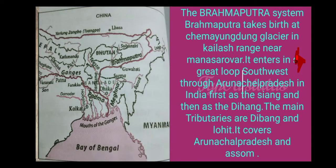The Brahmaputra System: the Brahmaputra takes birth at Chema-Yung-Dung Glacier in the Kailasa Range near Manasarovar. It enters India in a great loop, flowing southwest through Arunachal Pradesh, first as the Siyang and then the Dihang. The main tributaries are Dibang and Lohit. The Brahmaputra covers Arunachal Pradesh and Assam.